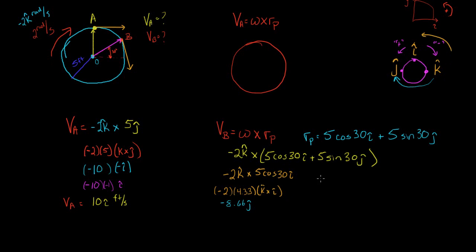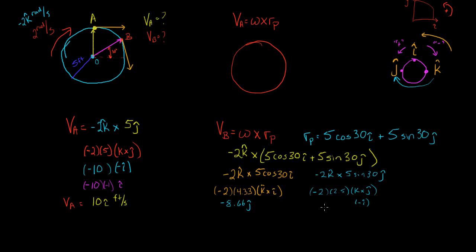The second term is (-2k) × (5sin(30°)j). Taking scalars out: -2 times 5sin(30°) = -2 times 2.5 = -5. Then k × j, which we already know is -i. So this term is -5 times -i, giving +5i.